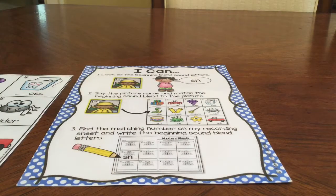The first thing you need to do is read your I Can card. And this card says I Can number one: Look at the beginning blend sound letters. Number two, say the picture name and match the beginning sound blend to the picture. And number three, find the matching number on my recording sheet and write the beginning sound blend letters.